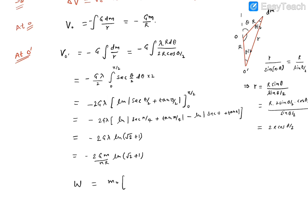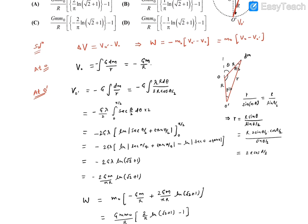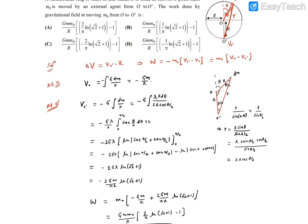Now we can find the work done by the gravitational force: W equals m0 times (V_O minus V_O_dash) equals m0 times [minus GM/R minus (minus 2GM/pi R times ln(root 2 plus 1))]. After simplification, taking GMm0/R outside the bracket, we get GMm0/R times [(2/pi) ln(root 2 plus 1) minus 1]. This matches option A perfectly. Option B is missing the factor of 2, option C has a sign error, and option D has both issues.